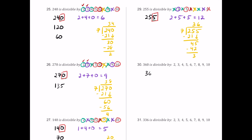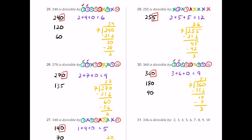For number 30, we have 360. It ends in 0, so 2 works. Half is 180 — still even — so 4 works. Half of 180 is 90 — still even — so 8 works. The digit sum 3 plus 6 plus 0 is 9, a multiple of both 3 and 9. Since 2 and 3 work, 6 works. It ends in 0, so 5 and 10 work. Dividing 360 by 7 leaves a remainder of 3, so 7 fails. It works for all of them but 7.